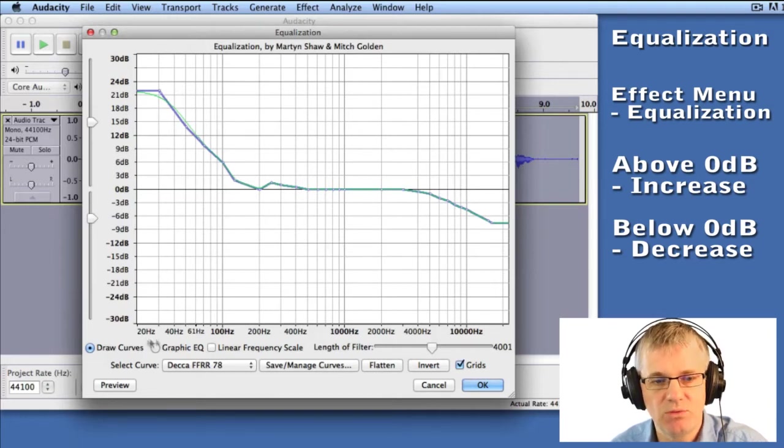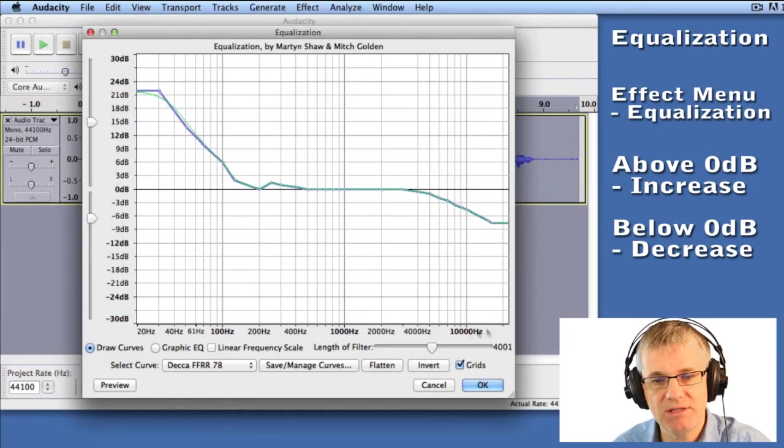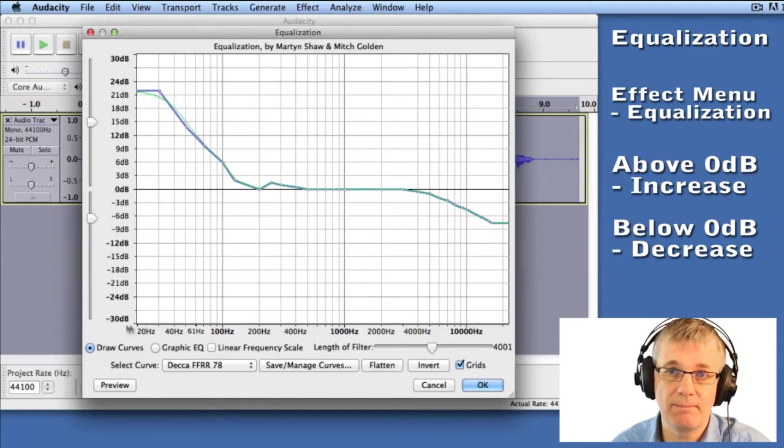On the left hand side we have 20 hertz - that's really, really low, pretty much outside the human hearing range. Way up on this end we have above 10,000 hertz, which is super high. So the high end is on the right side, and the low end, the bass section, is on the left side.